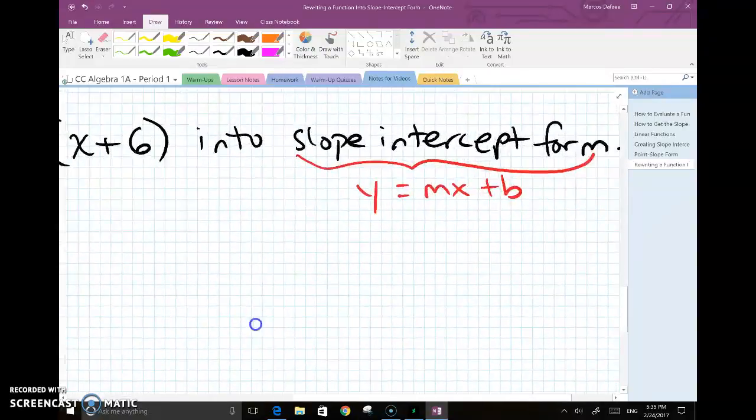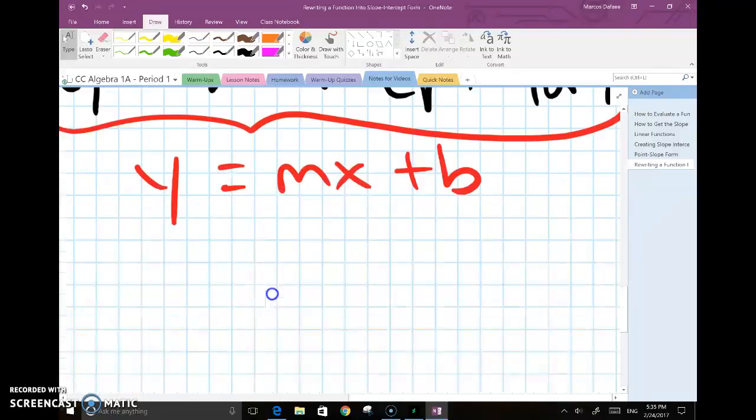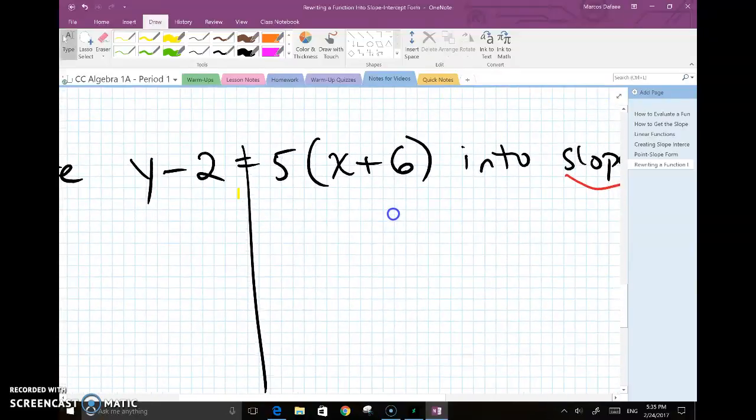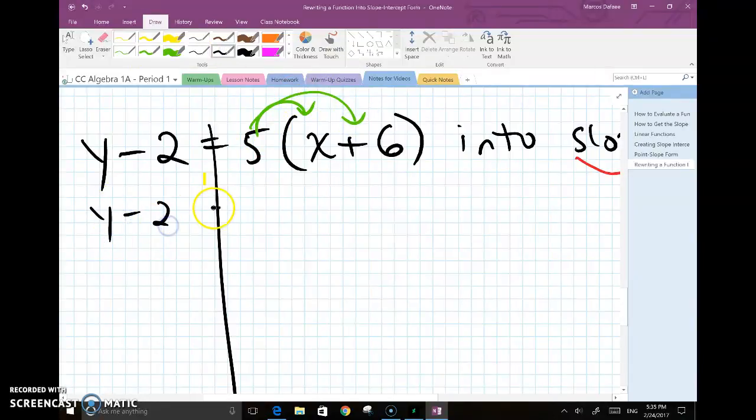We have to use what we know about distributing to get that x plus 6 out of there. Because in the end, there are no parentheses in slope-intercept form. The x is completely free, and so is the y. But if you look at point-slope form, our y is free, but our x is locked inside this parentheses with the plus 6. So right away, my first task is to take that 5 and distribute that inside. What I get is y minus 2 is equal to 5x minus 30. There, my x is now free.